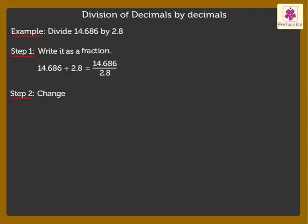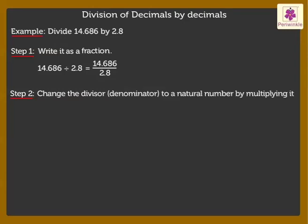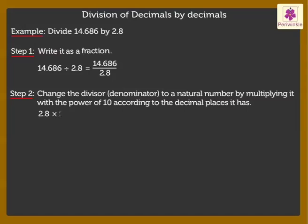Step 2: Change the divisor, that is the denominator, to a natural number by multiplying it with the power of 10 according to the decimal places it has. Thus, we get 2.8 × 10 = 28, as 2.8 has one decimal place.